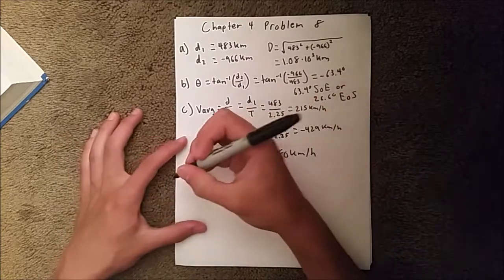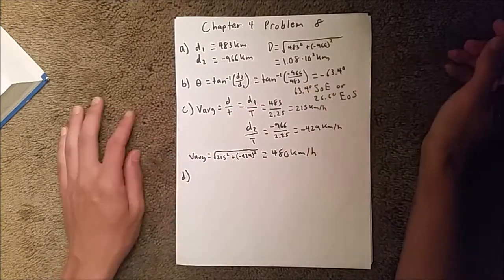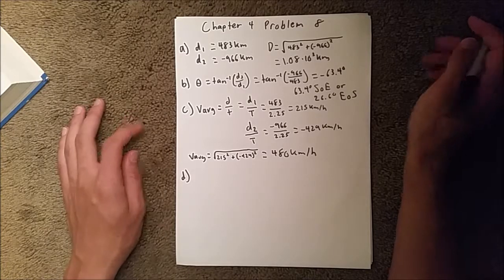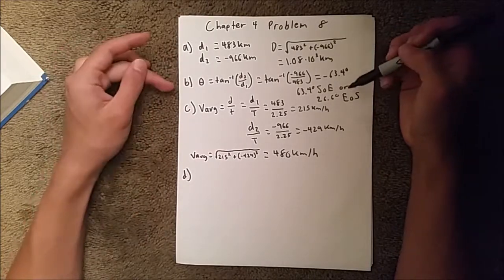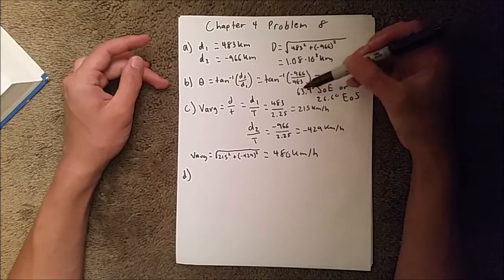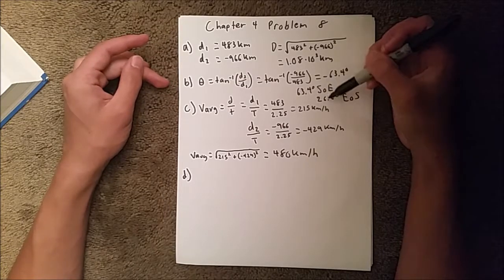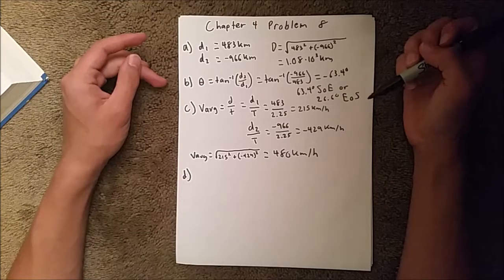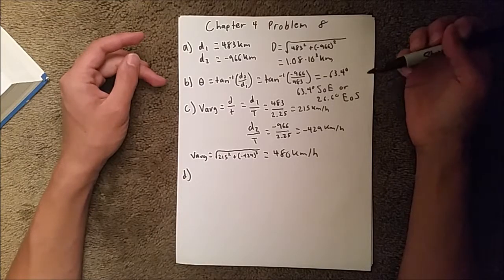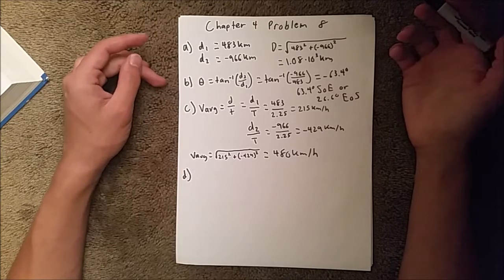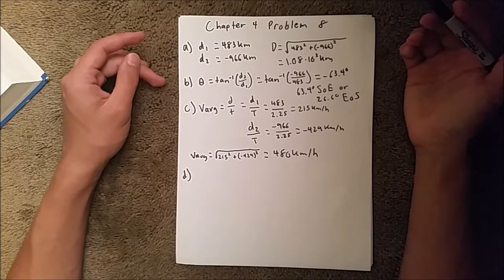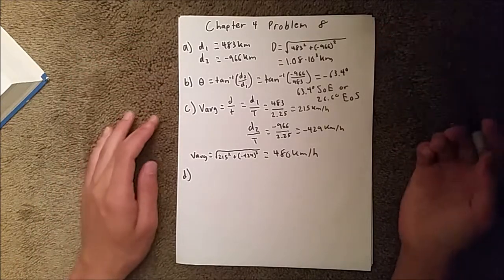Okay, now for part D, we are asked to find the direction of this velocity. And up here, in part B, we found that the plane is moving in these directions right here. And the velocity of an object is, in this case, the velocity is in the same direction of the plane's motion.